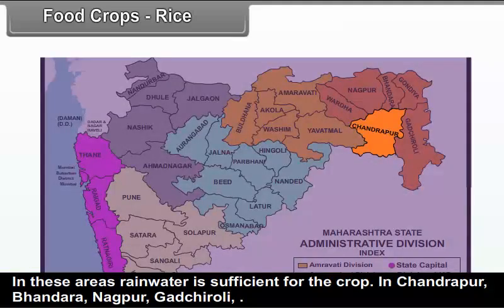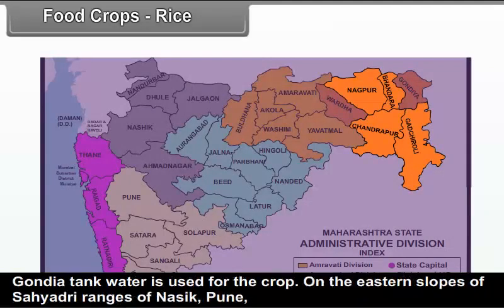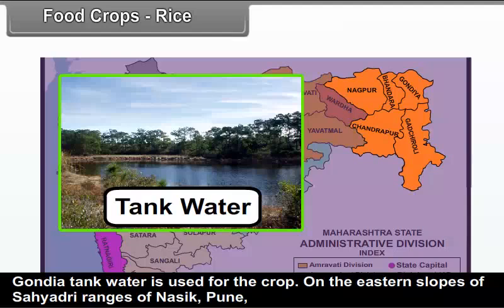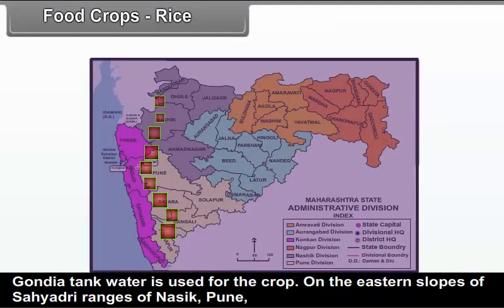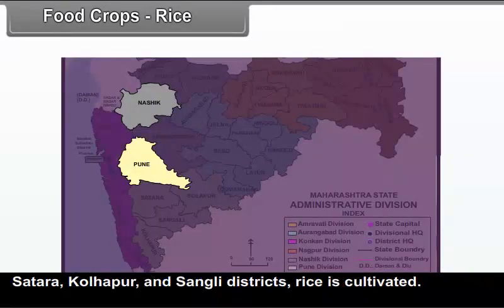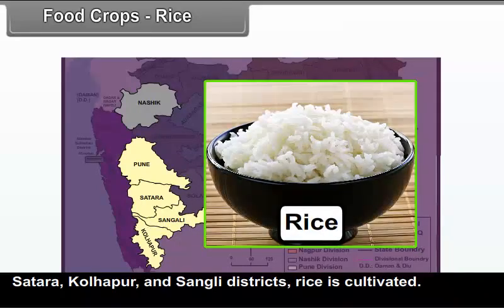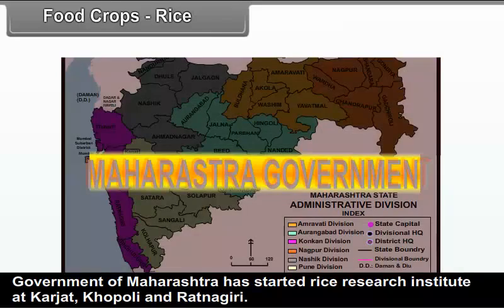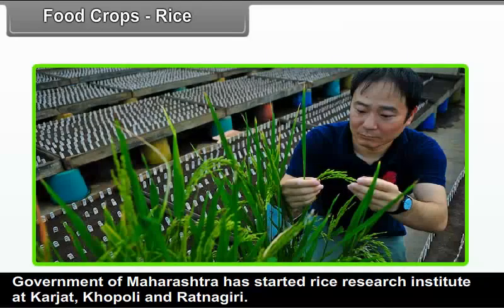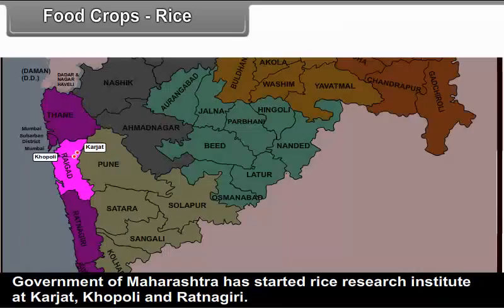In Chandrapur, Bhandara, Nagpur, Gadchiroli, and Gondiya, tank water is used for the crop. On the eastern slopes of the Sahyadri ranges in Nashik, Pune, Satara, Kolhapur, and Sangli districts, rice is also cultivated. The Government of Maharashtra has started rice research institutes at Karjat, Khopoli, and Ratnagiri.